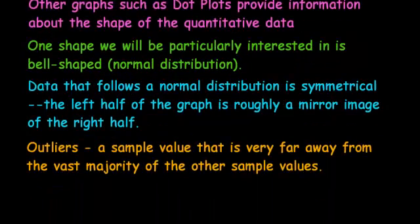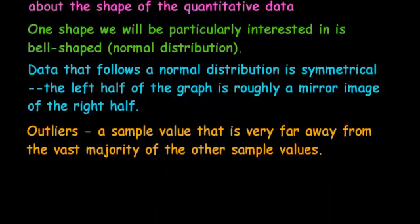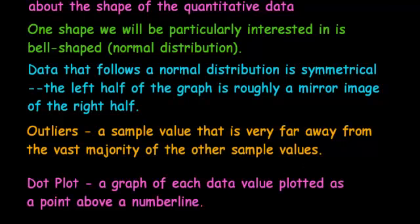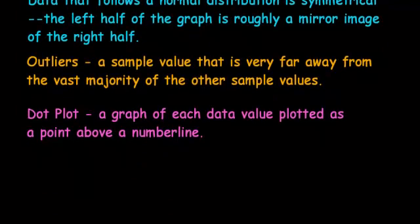Also, these types of graphs can tell us if we have any outliers. Now, an outlier is a sample value that's very far away from the vast majority of the other sample values. Okay, with that information now, let's look at dot plots. A dot plot is a graph of each data value plotted as a point above a number line. So this is a very simple graph.